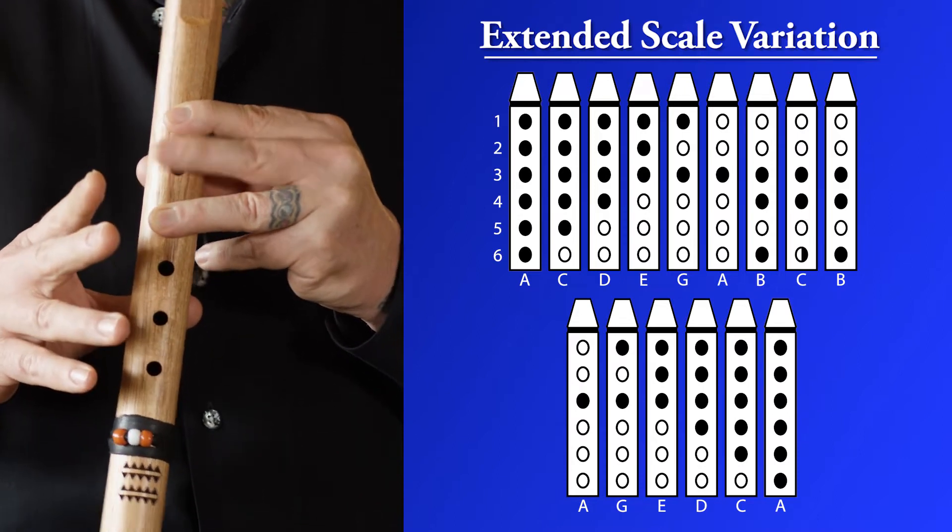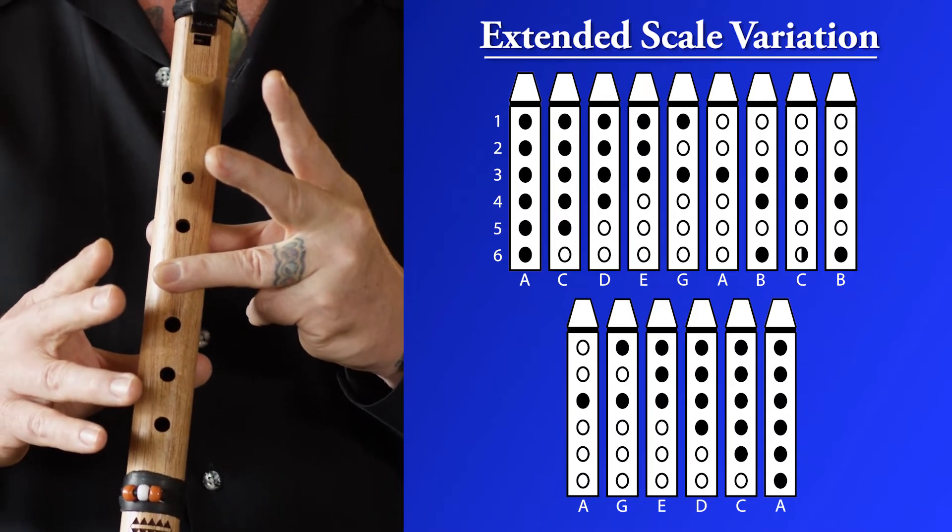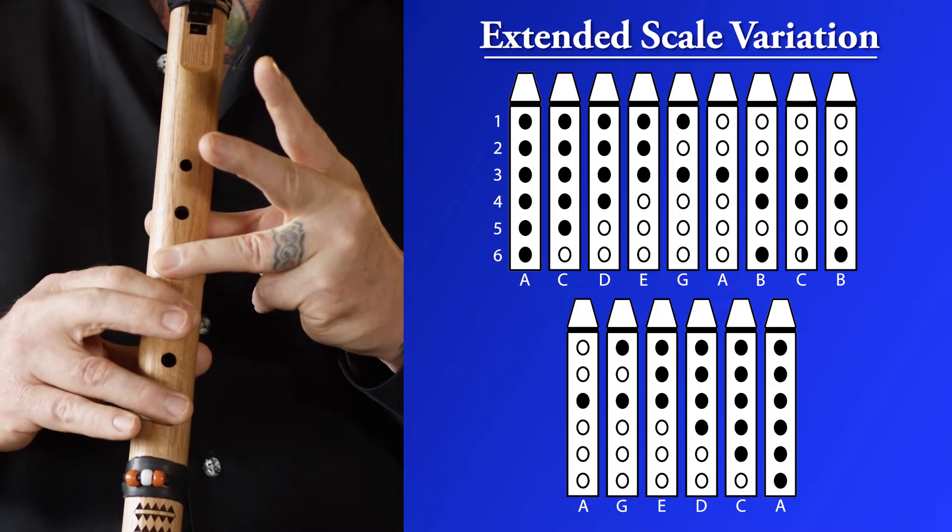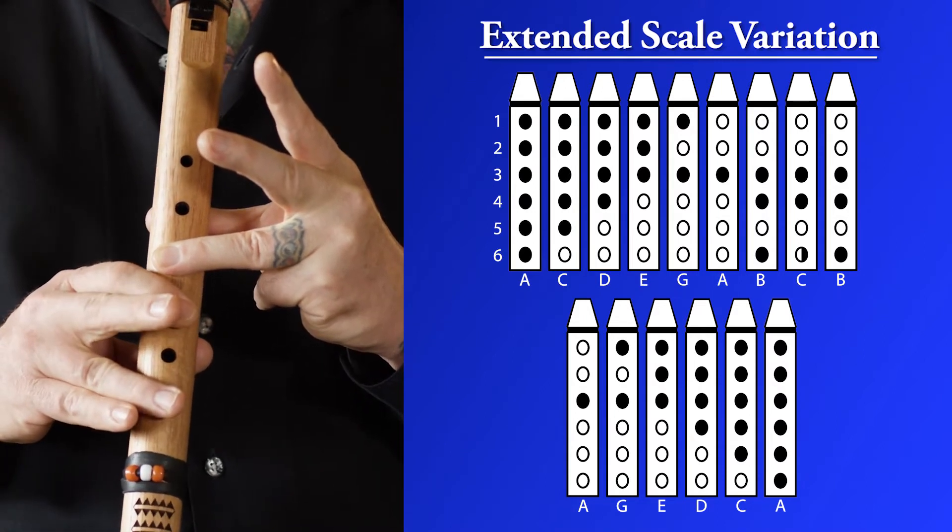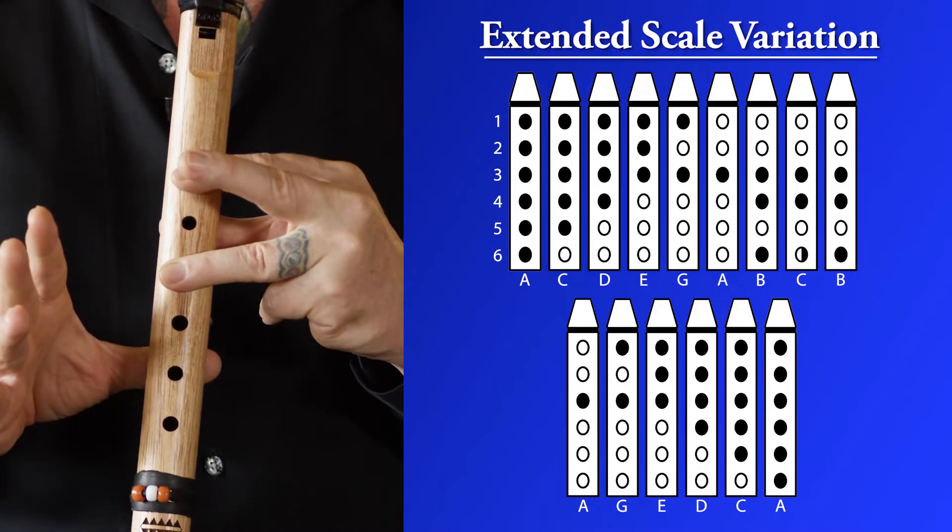All the way to the top, just like the basic scale, then we have our three new, actually two new notes, three new movements. It's three, four, six, half, cover, open, and then we go back down.